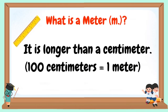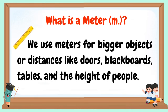A meter is longer than a centimeter. 100 centimeters equals 1 meter. We use meters for bigger objects or distances like doors, blackboards, tables, and the height of people.